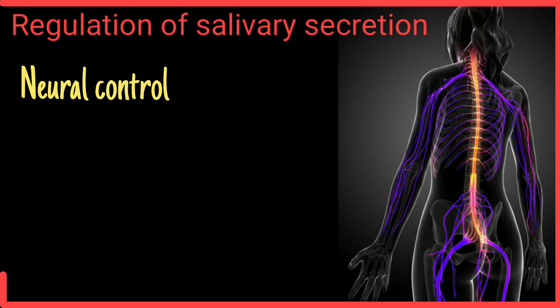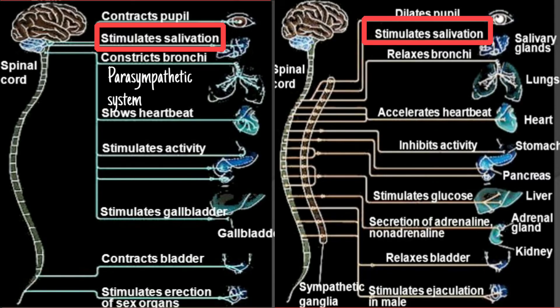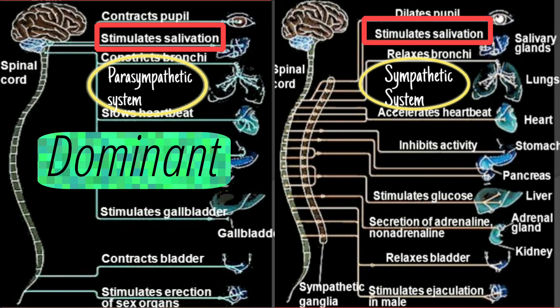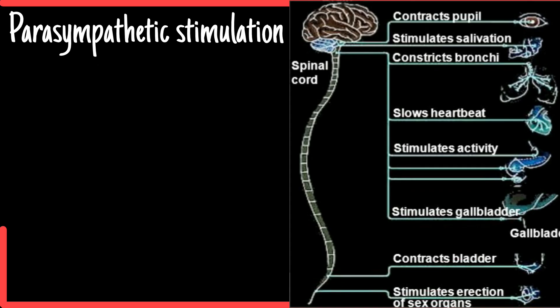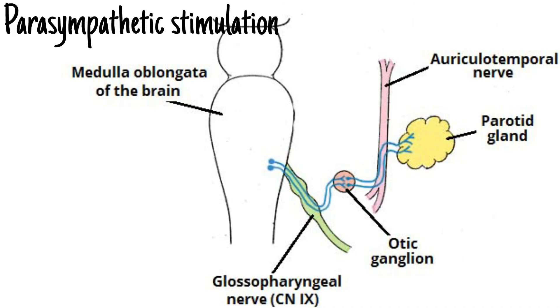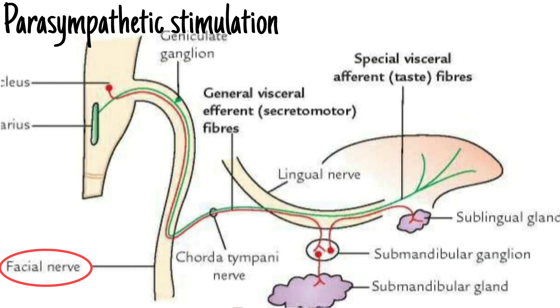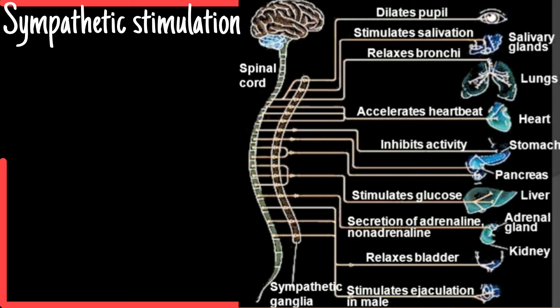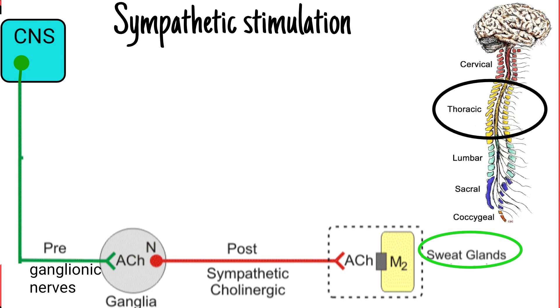Talking about the regulation of salivary secretion: salivary secretion is exclusively under neural control by the autonomic nervous system. It is increased by both parasympathetic and sympathetic stimulation, although parasympathetic stimulation is dominant. Parasympathetic stimulation favors abundant watery secretion rich in enzymes, and occurs via cranial nerves — the glossopharyngeal nerve innervating the parotid gland, and the facial nerve innervating the submandibular and sublingual glands. Sympathetic stimulation favors viscous secretion and takes place by preganglionic nerves in the thoracic segment of the spinal cord, which synapse with the postganglionic neurons.